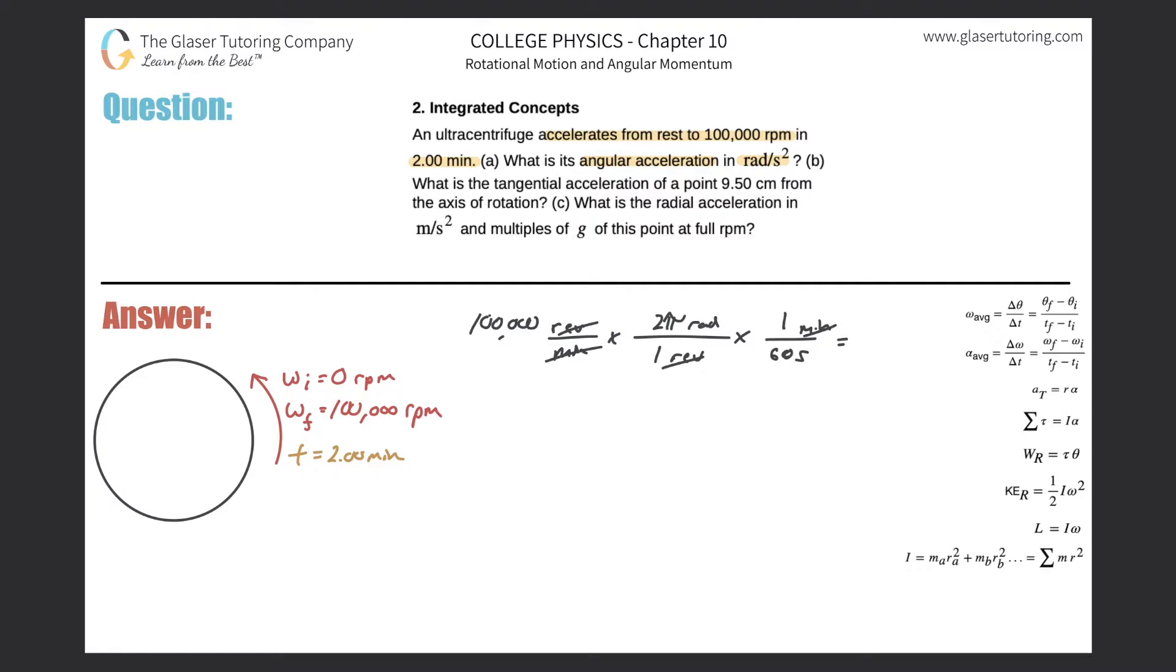So 100,000 times 2π divided by 60. We get a value in scientific notation: about 1.05 times 10 to the fourth. And this is radians per second. So we took care of that.